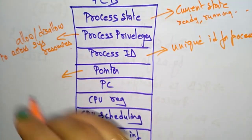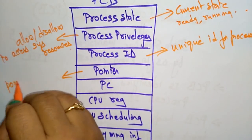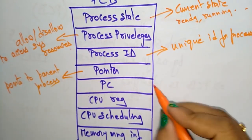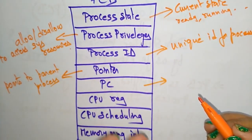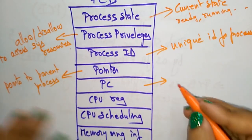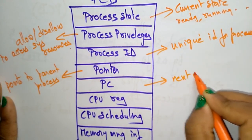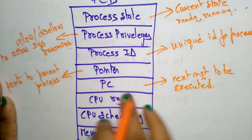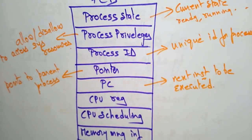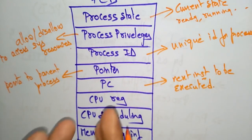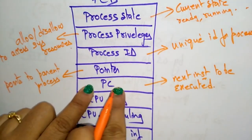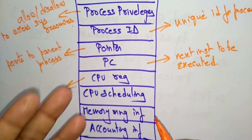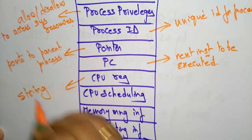The pointer always points to the parent process. The program counter points to the address of the next instruction to be executed in the process. If this process is over, the address of what instruction or process has to execute next is stored in the program counter.